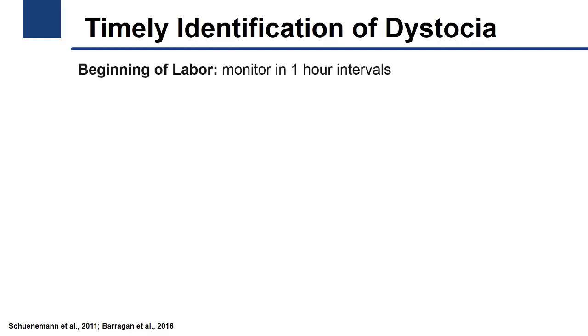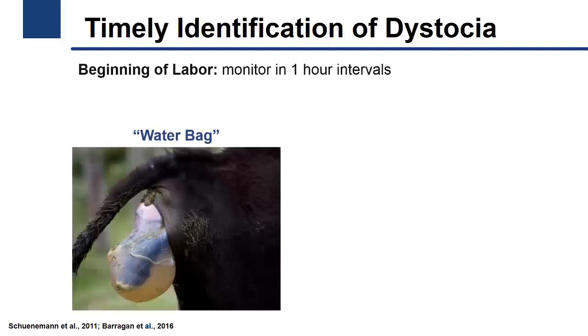In order to assist a dystocic birth in a timely manner, maternity personnel must monitor the close-up pen at least every hour to identify cows starting labor. The beginning of labor is marked by the appearance of the water bag or feet of the calf outside the vulva.